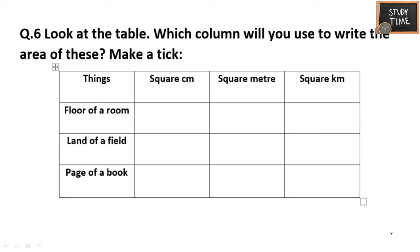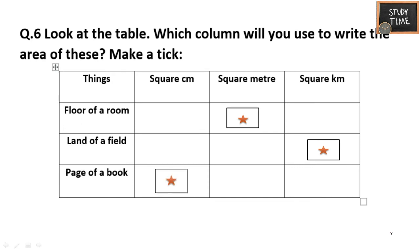Look at the table. Which column will you use to write the area? Make a tick. The floor of a room uses square meter. Land of a field uses square kilometer. A page of a book uses square centimeter.